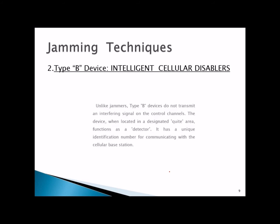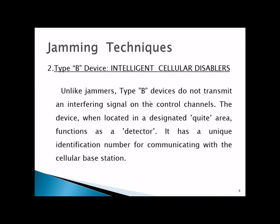Type B, or intelligent cellular disablers, do not transmit an interfering signal on the control channels. When located in a designated quiet area, the device functions as a detector. It has a unique identification number for communicating with the cellular base station — this is how intelligent cellular disablers work.